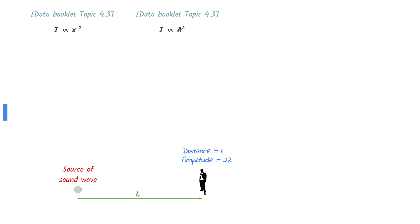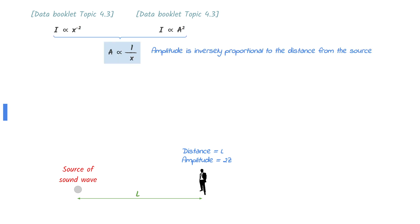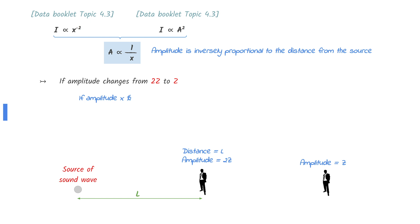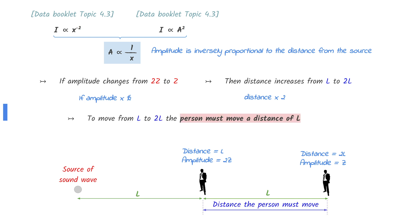There are two equations involving intensity, amplitude, and distance from the source. Combining these into one equation gives amplitude inversely proportional to the distance from the source. This means that if the amplitude changes from 2Z to Z — in other words, if the amplitude halves — then the distance will increase from L to 2L, or in other words, the distance will double. Therefore, to get from L to 2L, the person must move a distance of L.